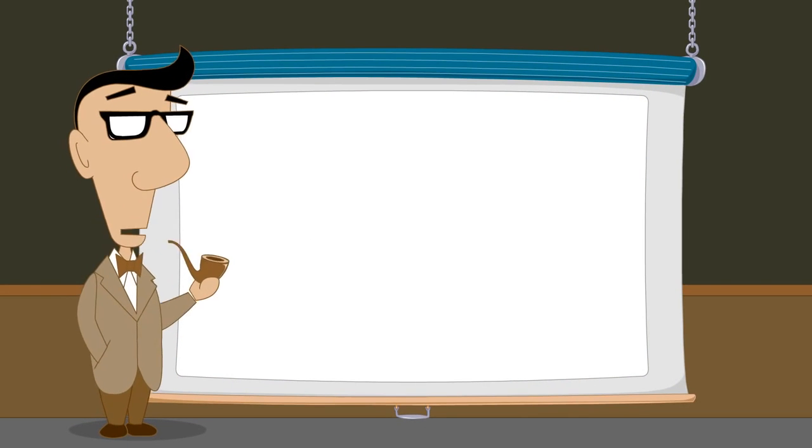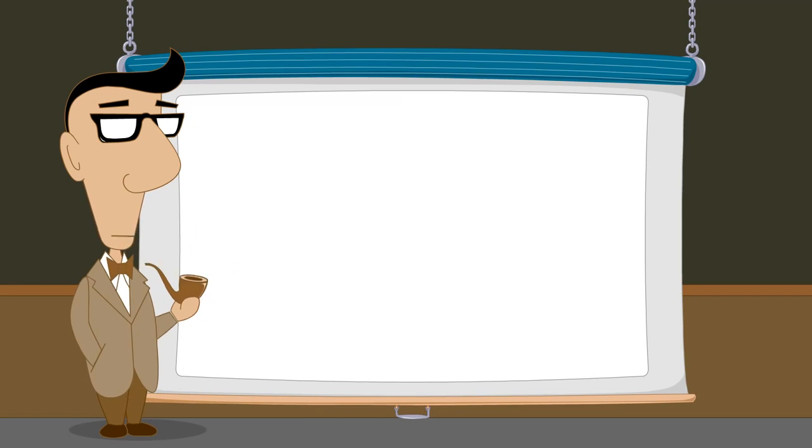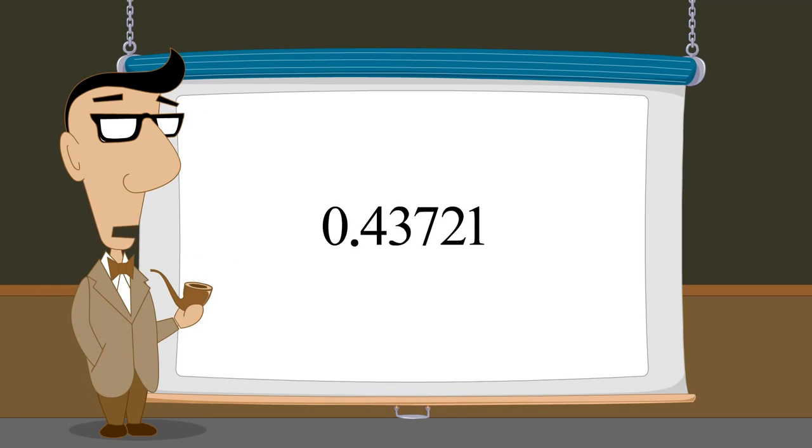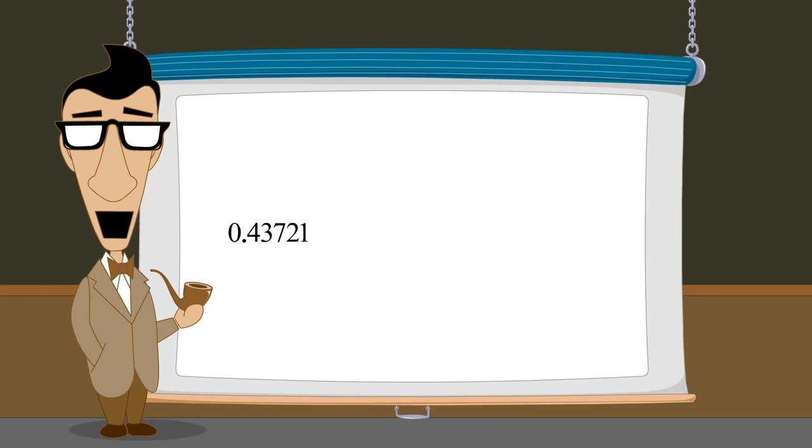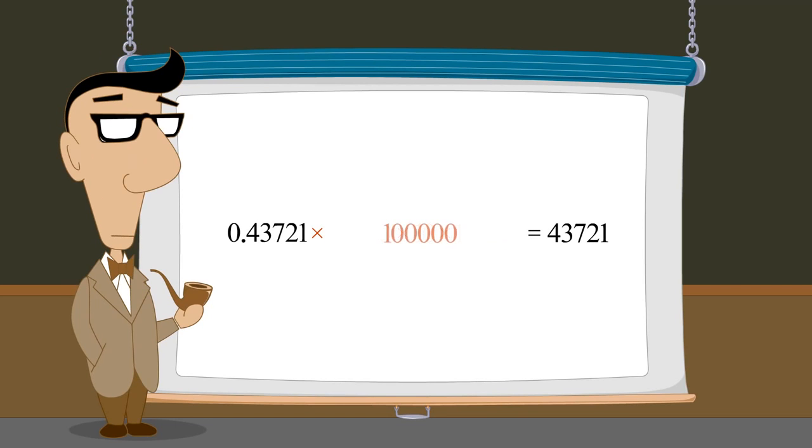We can use this same technique to convert any decimal number with a finite number of digits to a fraction, by multiplying it by ten enough times to produce an integer, and then dividing the integer by the same amount we multiplied by.